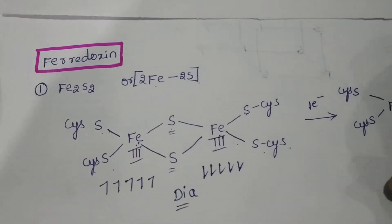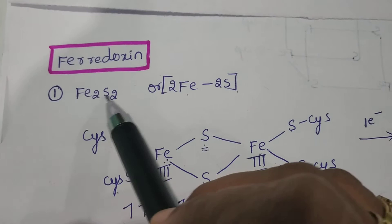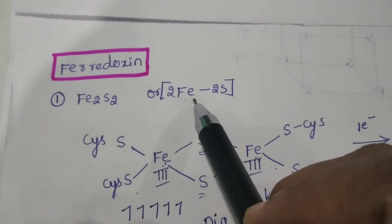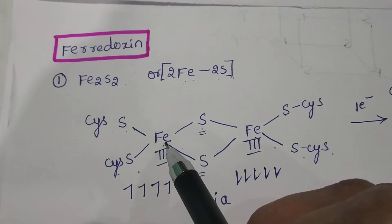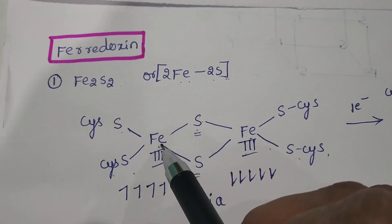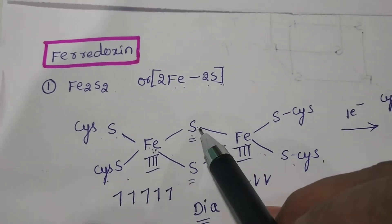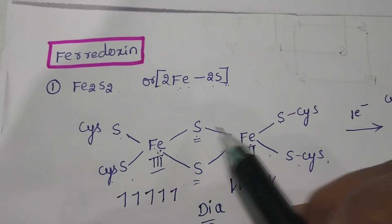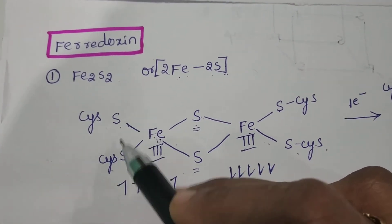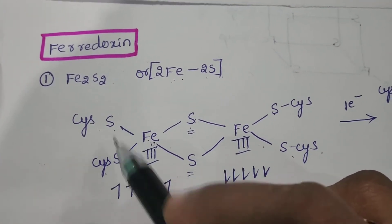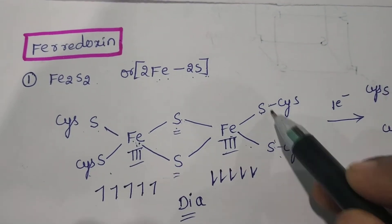This is the structure of ferredoxin. Ferredoxin has an Fe2S2 (or 2Fe-2S) structure. In this, iron is attached with inorganic sulfurs — iron, sulfur, iron — so Fe-S-Fe bonds are present in this ferredoxin. Also, two cysteine molecules are attached to each iron: this iron is attached to two cysteine molecules, and this iron is also attached to two cysteine molecules.